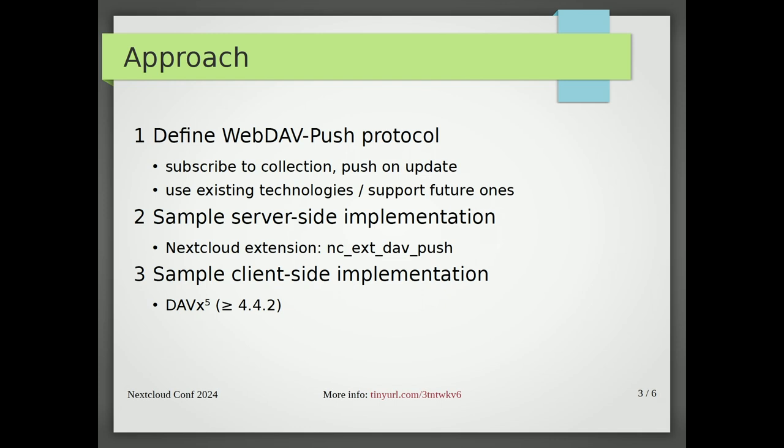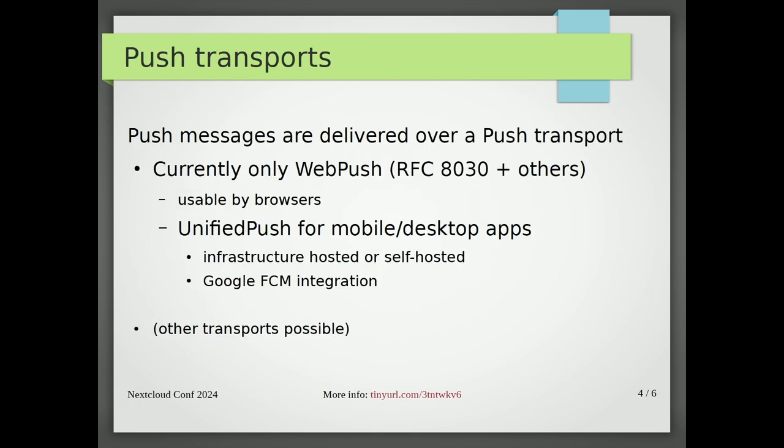Then we propose two implementations. One for servers, which is obviously Nextcloud, and also a client-side implementation, which in our case is DAVEx 5. But any server can use it, any client can use it — if they implement it, they can use it. Right now we only support UnifiedPush for mobile, but WebPush is technically also supported. And if somebody develops a new transport method, it can also be used. Any transport method can be used as long as it's implemented.